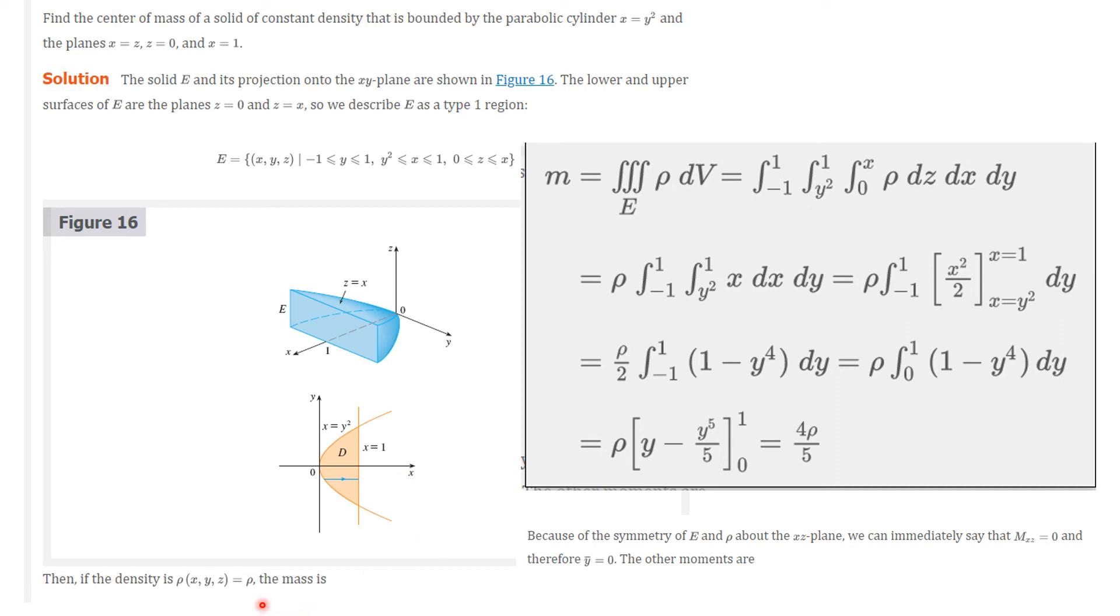So the mass then is equal to, that's the first calculation we do, is going to be the triple integral over the solid of rho dv. This is the iterated integral that I think I already explained. Oh, the way we get that y goes from minus 1 to 1 is we consider these points of intersection here. So when x is 1, y goes from minus 1 to 1. Those are the boundary points that we have there.